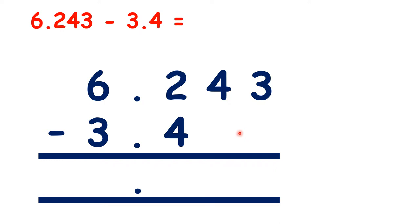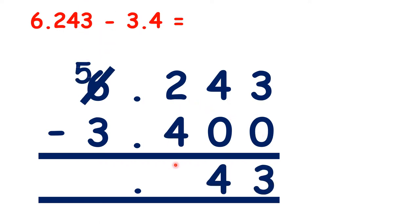Then, if there are empty place values, if it makes it easier for you, you can write in zeros. Then you just subtract as normal. So we have 2.843 as our answer.